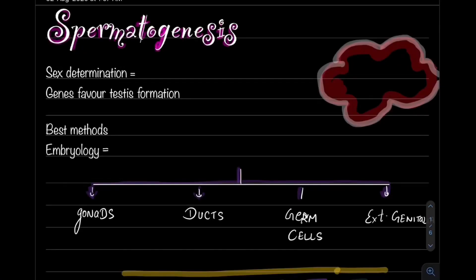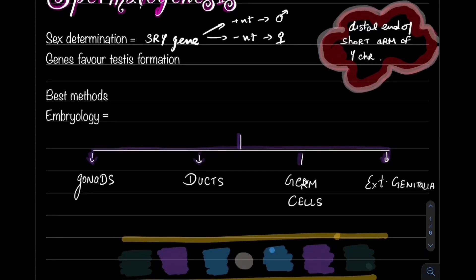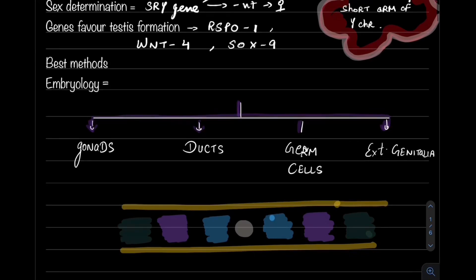Hi guys, this is Nitish, welcome to my channel. Today we are going to study about spermatogenesis and sex determination. SRY genes determine the sex — if it is present then it's male, if it's absent then it's female. It is present in the distal end of the short arm of the Y chromosome. Genes favoring testis formation include RSPO1. The best method for sex determination is karyotyping.